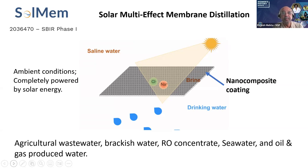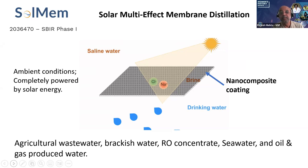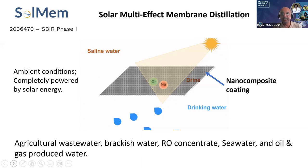I'll give three examples of companies we have funded recently to illustrate where nanotechnology is playing a role in water treatment. The first is Sol Mem — a solar multi-effect membrane technology. They have a membrane coated with nanomaterials: it is a very thin photonic coating that allows heating of water very close to the membrane surface. Because of their unique technology, they achieve multiple-effect evaporation and significant desalination of the input water. This technology can potentially be used for treating agricultural wastewater, brackish water, reverse osmosis brine, seawater, and produced water.